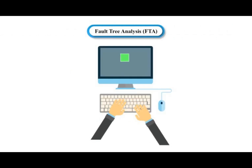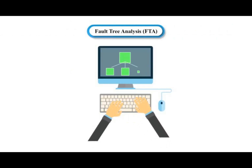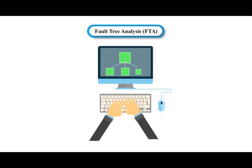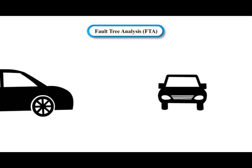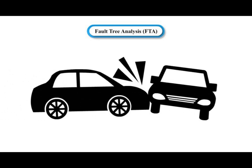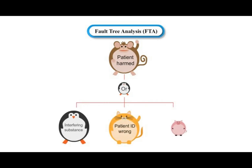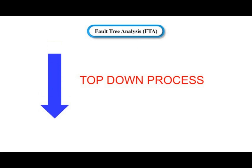Fault Tree Analysis. The fault tree itself is a graphical model of the various parallel and sequential combinations of faults that will result in the occurrence of a predefined undesired event. A fault tree starts with an adverse top-level event, such as 'patient harmed,' and the causes of this event are enumerated until all causes have been listed. This process is sometimes called a top-down process.